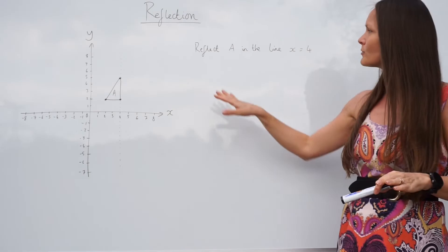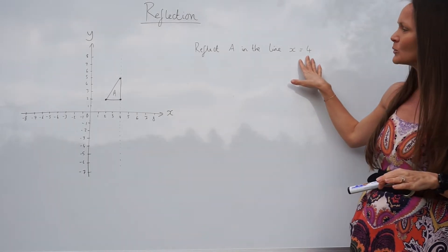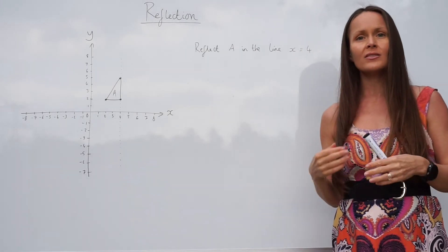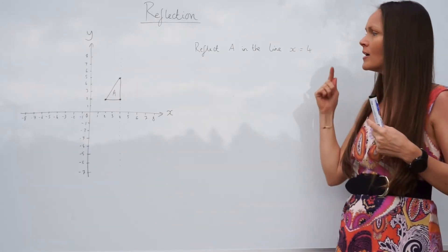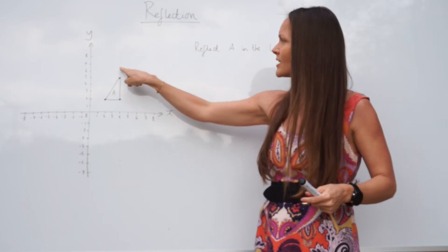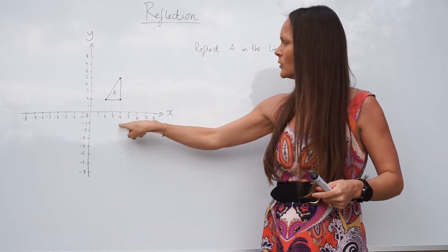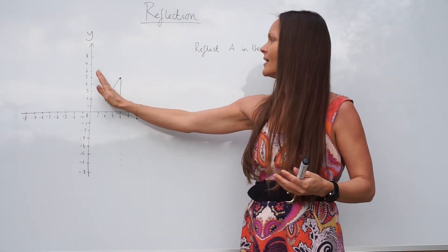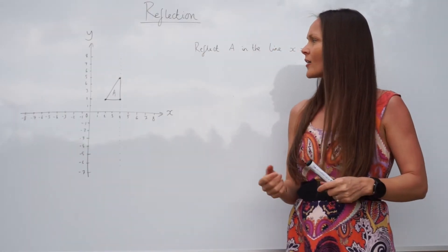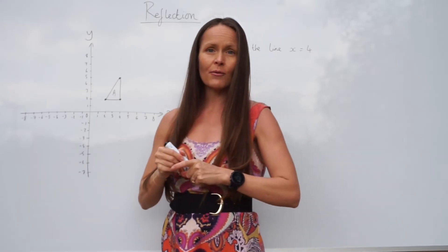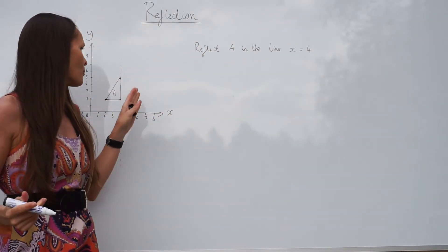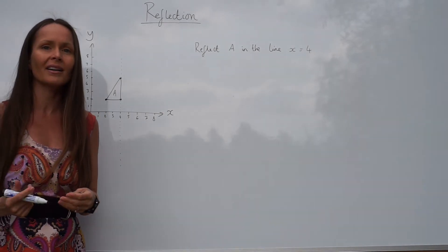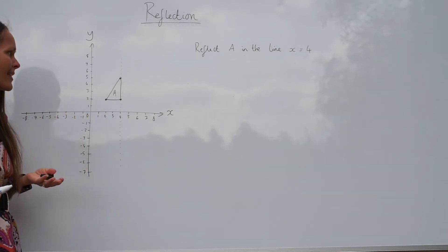Next up, reflect A in the line x equals four. Just like before, if the line x equals four isn't already indicated on your graph, find it. I've just done a few dashes here along x equals four to show that line, and we need to reflect triangle A in that new mirror line. It's a little bit different this time because two of the points are on the mirror line. When points lie on the mirror line, they don't move — they stay where they are.